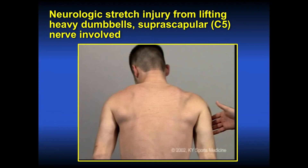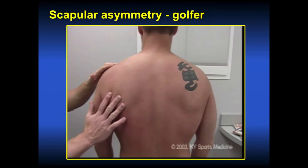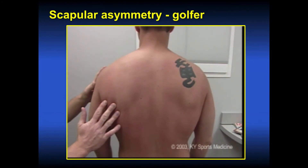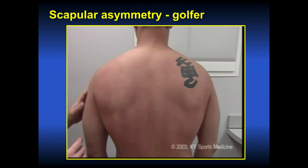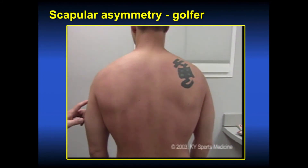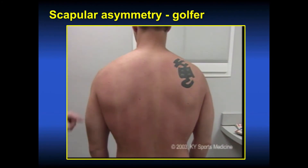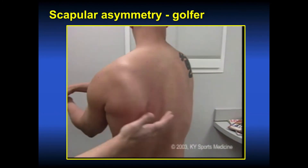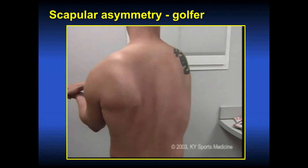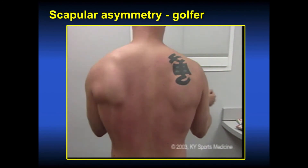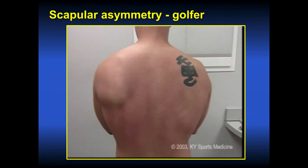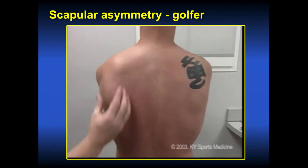Another example of scapular dyskinesis is this right-handed golfer who had a labrum repair by me a couple of years previously. I asked him to do the movement that causes his symptoms — swinging his club. Just looking at him, his scapula appears pretty symmetrical, but when we bring him back, you can see how his scapula wings. The muscles look okay, but he has scapular dyskinesis in a forward-flexed, protracted position, not functioning like the other side. Have him do external rotations and a push-up on the wall, and you can see the asymmetry.